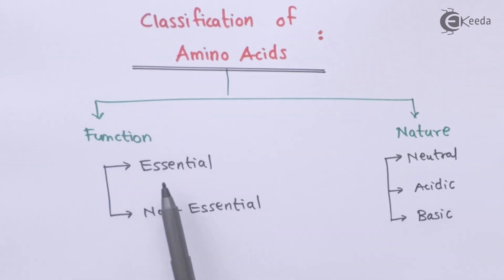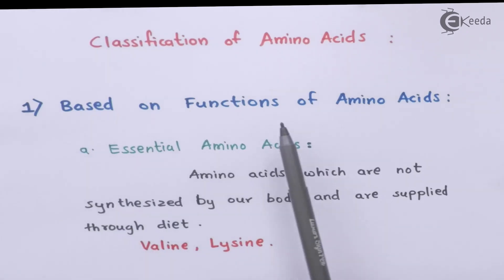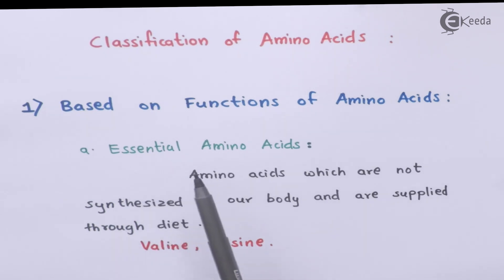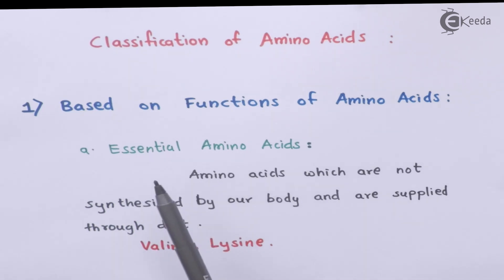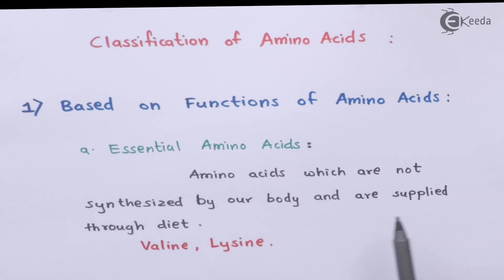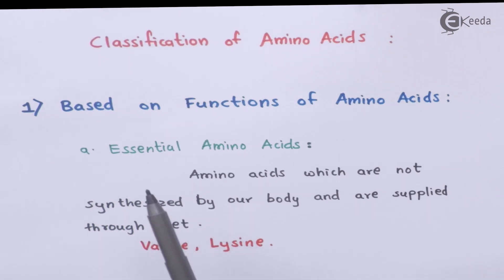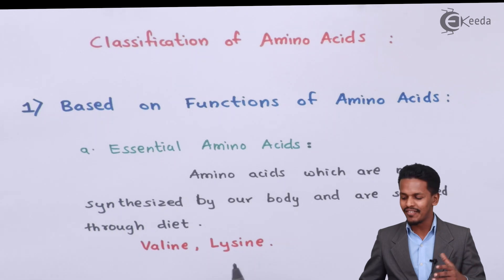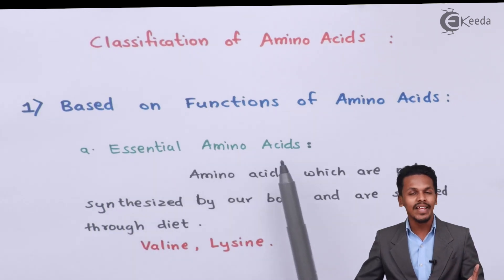So let us understand what are essential and non-essential amino acids. Based on the function, they are divided into two types. Essential amino acids are those amino acids which are not synthesized by our body and are supplied through the diet. For example, valine and lysine are two examples of essential amino acids.